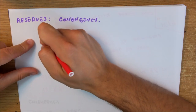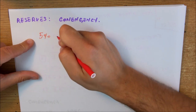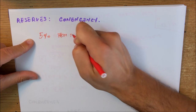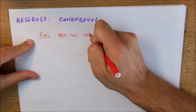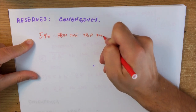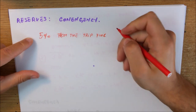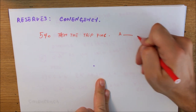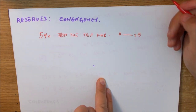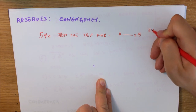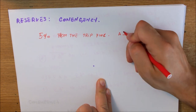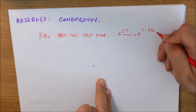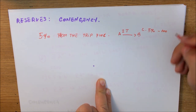We have a few methods of calculating the contingency fuel. The simplest method is five percent of the trip fuel. This means that if we're flying from A to B and the trip fuel consumption is two tons, the contingency fuel will be five percent of two tons, which is 100 kilograms.